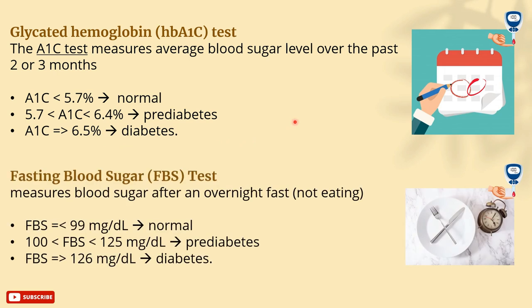The second test is the fasting blood sugar test. It measures the blood sugar after an overnight fast. If it is equal to or less than 99 mg/dL, the person's sugar level is considered normal. If it is between 100 and 125 mg/dL, the person is in the pre-diabetic stage. If it is equal to or higher than 126 mg/dL, the patient is considered diabetic.